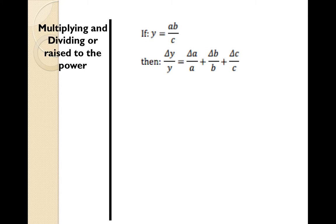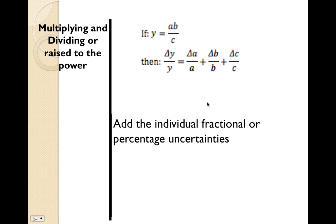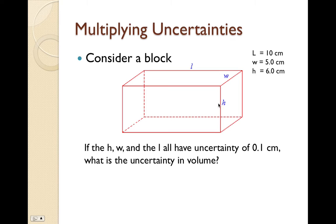When multiplying, dividing, or raising a measurement to a power, if y is equal to a times b over c, then the fractional or percentage uncertainty of the measurement is equivalent to the addition of all the percentage uncertainties of your other measurements. So you want to add the individual fractional or percentage uncertainties.